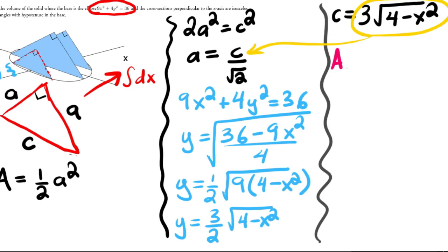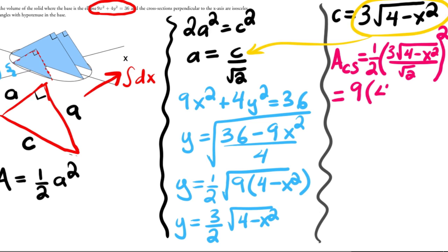What that means is the area of the cross section is going to equal 1/2 A². So 1/2 times A, which is C over root 2, which is 3√(4 - x²) over √2, squared. If I simplify, 3² is 9, and the square root of 4 - x² squared is just 4 - x², and over root 2 squared is just 2 times 2 is 4. So this is the area of the cross section.